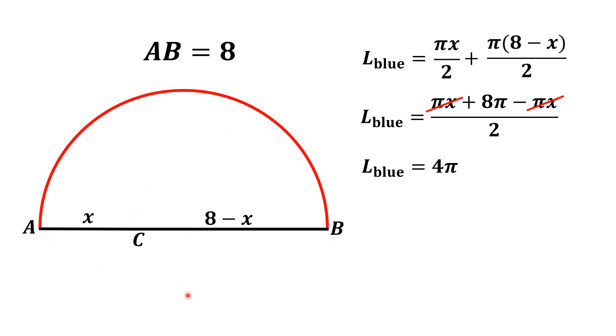Now, we focus on the red curve. Since this is again a semicircle and its diameter is 8 units, using the same formula, we get the length of the red curve as 8π/2, which equals 4π.